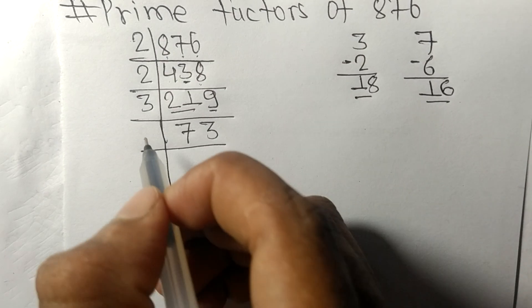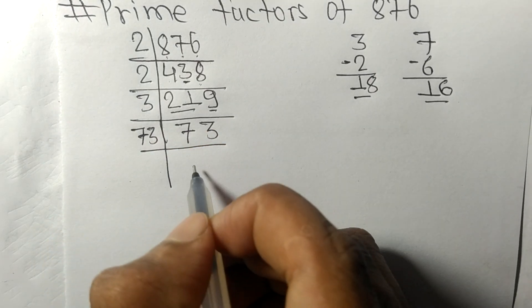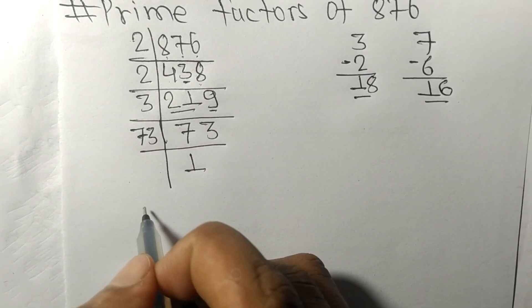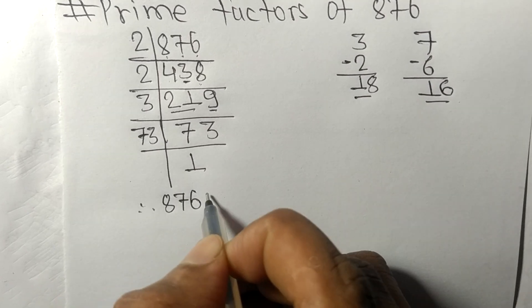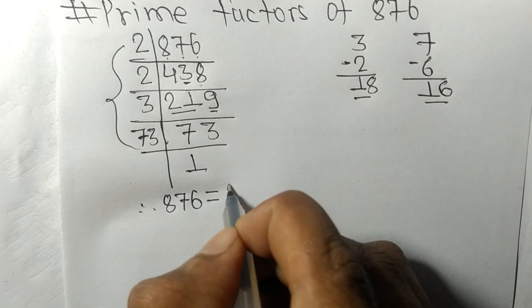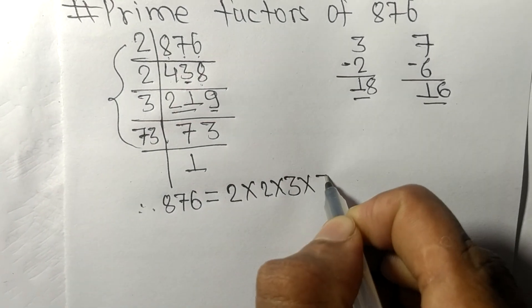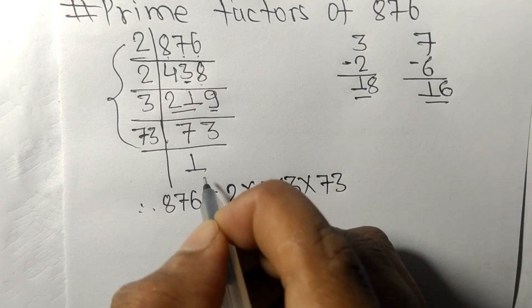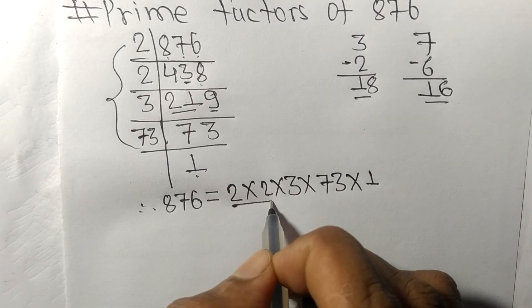On dividing we get one. Therefore 876 is equal to two times two times three times 73. From here it is one, so this two, three, 73, and one are the prime factors of 876.